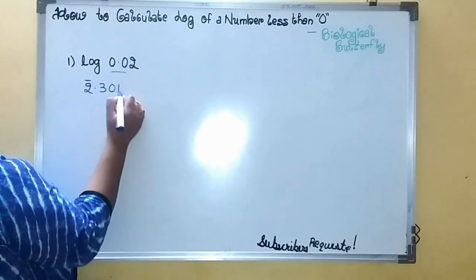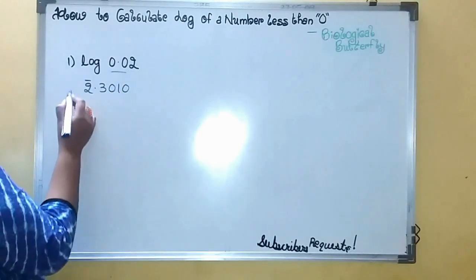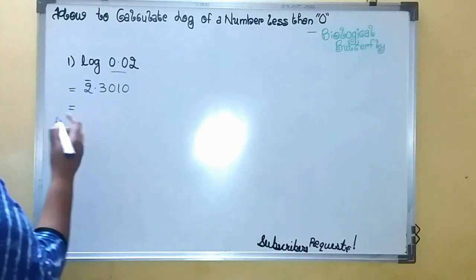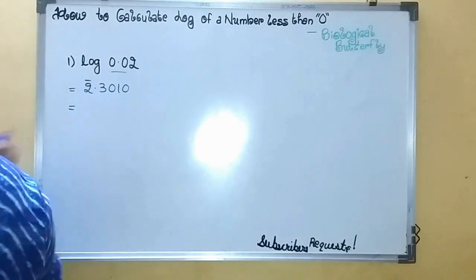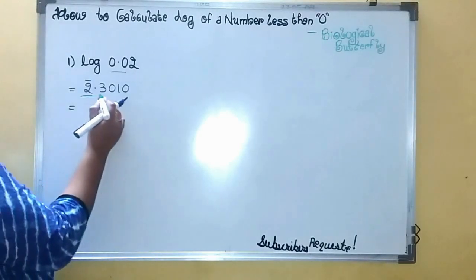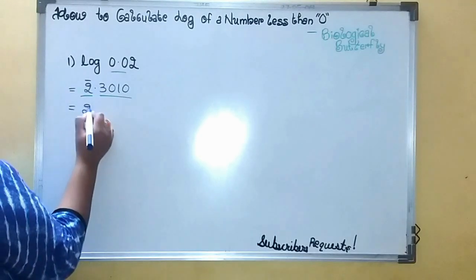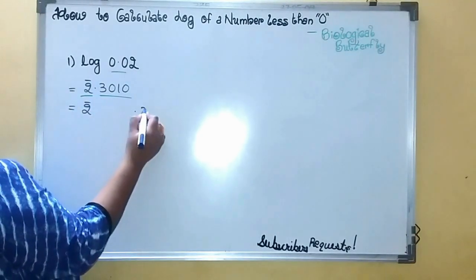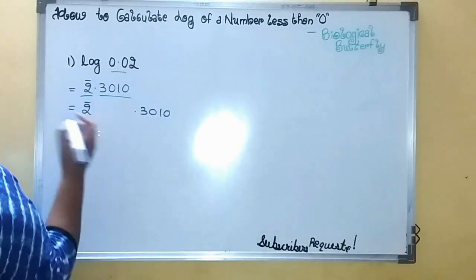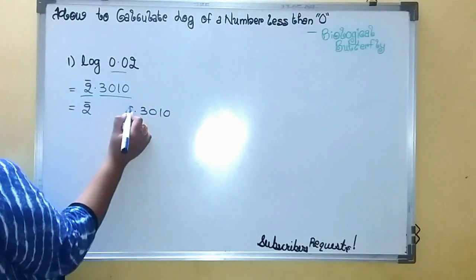Then what you will do is distribute this number into two parts: this is one part, this is the second part. This is two bar decimal 3010. What you will do is put a zero here.